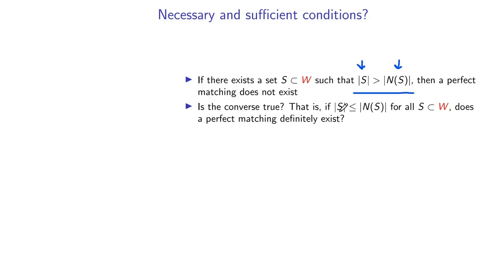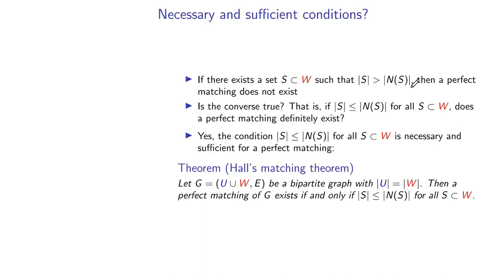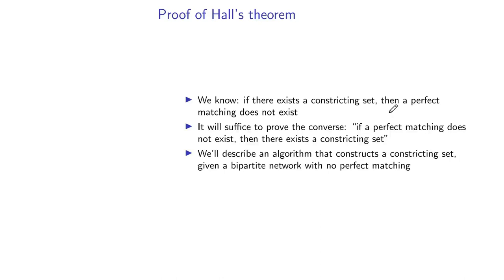A perfect matching exists if and only if there is no constricted set. Let's prove that statement. We'll do a lot of manipulation with logic. We know that if there is a constricted set, then there isn't a perfect matching. We want to prove: if there isn't a constricted set, then there is a perfect matching — equivalently, the contrapositive: if a perfect matching does not exist, then there exists a constricting set. We'll take a network, assume there isn't a perfect matching, and find a constricting set.